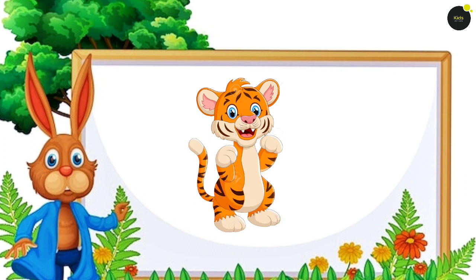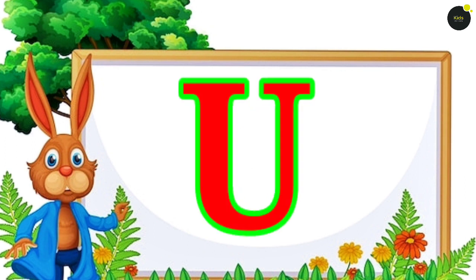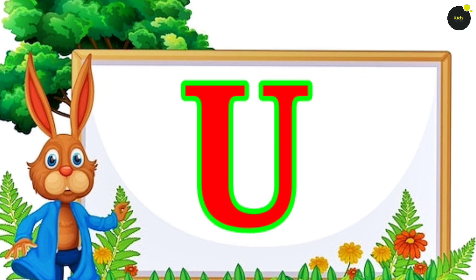T for Tiger. Tiger means Chita. U for Umbrella.